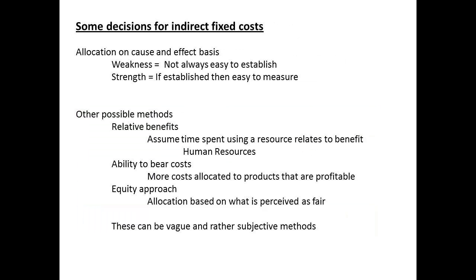Cost allocation for indirect fixed costs using allocation bases works well when the relationship can clearly be established with the cost pool. The measurement is fairly simple to make. However, sometimes it is not always easy to establish a clear relationship or the allocation base. There are other possible methods that you may find are occasionally used: relating the time spent using a resource to relative benefits is one such method. Allocating on the basis of a department's ability to bear the cost is another. An allocation based on what managers see as fair is another. For all of these methods, it is clear that there is a large measure of subjectivity, so these methods are often seen as rather vague.